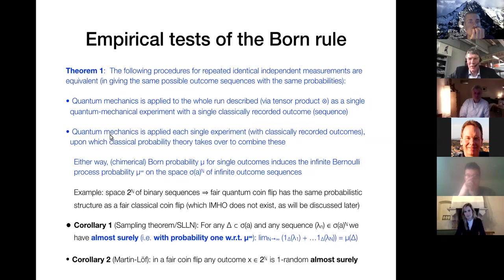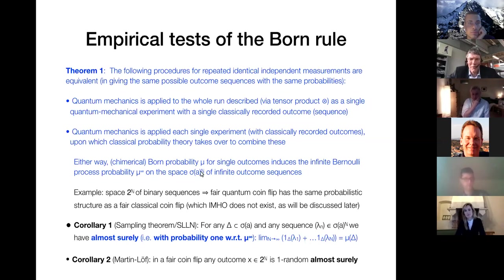It's the second procedure that is usually taken, but it's justified by the first one. Either way, the Born probability for single outcomes induces the infinite Bernoulli process probability on the infinite Cartesian product of spectrum — the spectrum of A, the operator you're measuring, to the power n. By Kolmogorov probability theory, there is such a measure induced by the single-case measure, and that's the empirically significant thing.